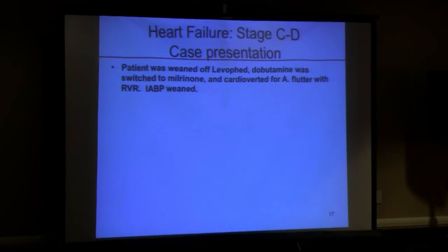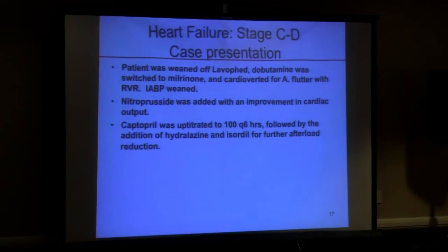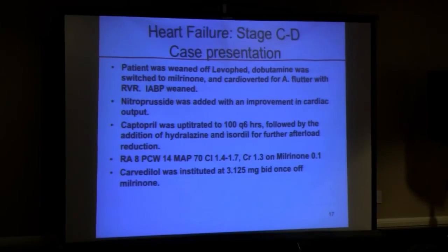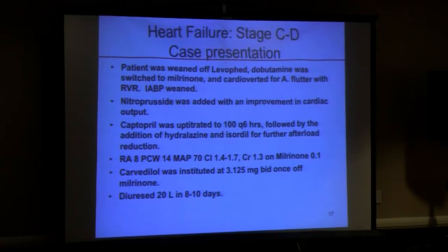The patient was weaned off levophed, dobutamine was switched to milrinone, he was cardioverted for atrial flutter, the balloon pump was weaned, and nitroprusside was added for afterload reduction — with improvement in cardiac output. Captopril was uptitrated to 100 mg q6h, followed by addition of hydralazine and isosorbide. This patient liked afterload reduction. On minimal milrinone before PA cath removal, wedge was down, RA was down — and carvedilol was started.